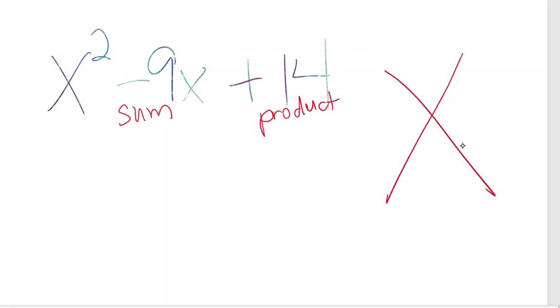So if we were to fill in our diamond puzzle, we would look for what two numbers have a product of 14, so they multiply to give 14, and they have a sum of negative 9, so they multiply to give 14 and add to give negative 9.